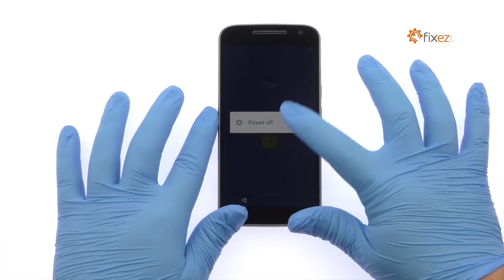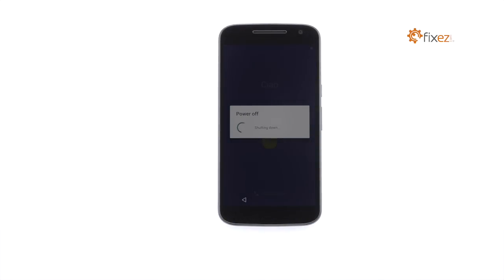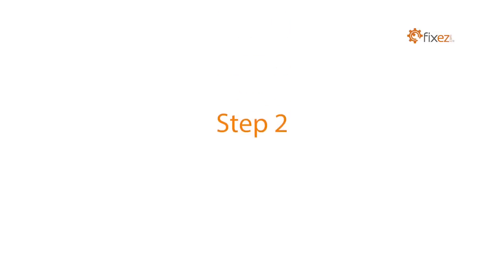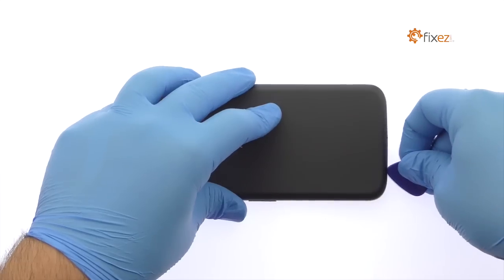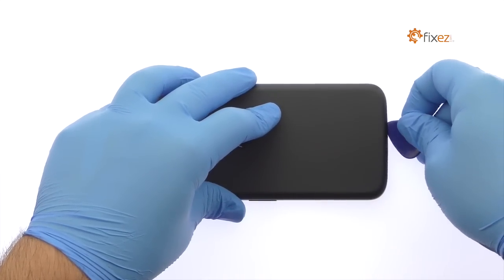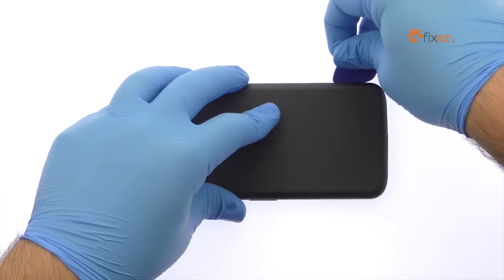Power down your Motorola Moto G4 smartphone. Use the plastic triangle opening tool or your fingernails to work around the Moto G4 rear cover and release the plastic clips securing it in place.